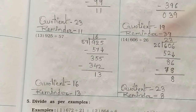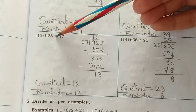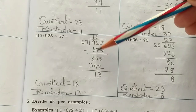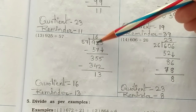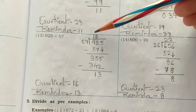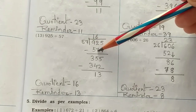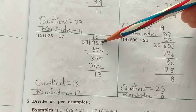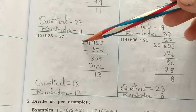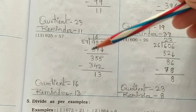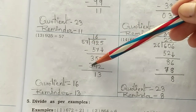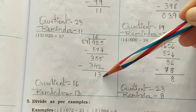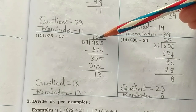Question 13: 925 divided by 57. We take 57 ones because 57 twos are greater than 92. Write 1 here. Subtract 57 from 92 and you get 35. Bring down the 5 to get 355. 57 sixes are 342 — subtract and you get 13 remainder. Your answer is 16 with remainder 13.